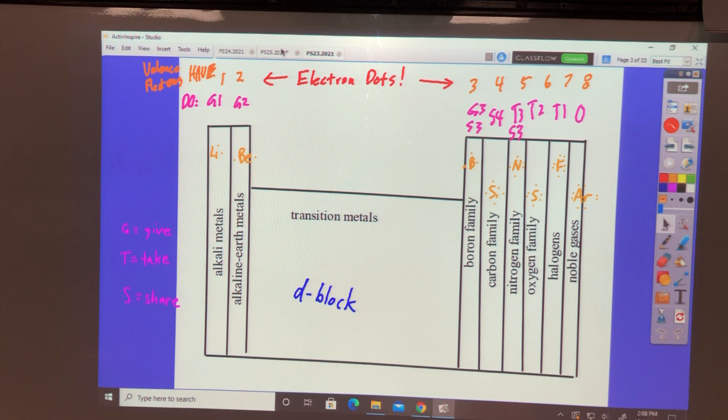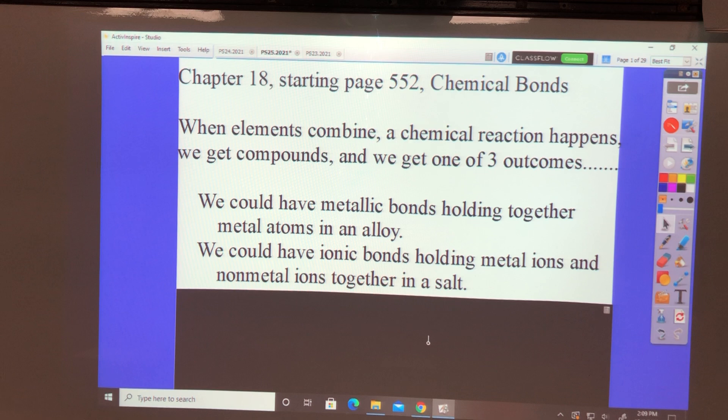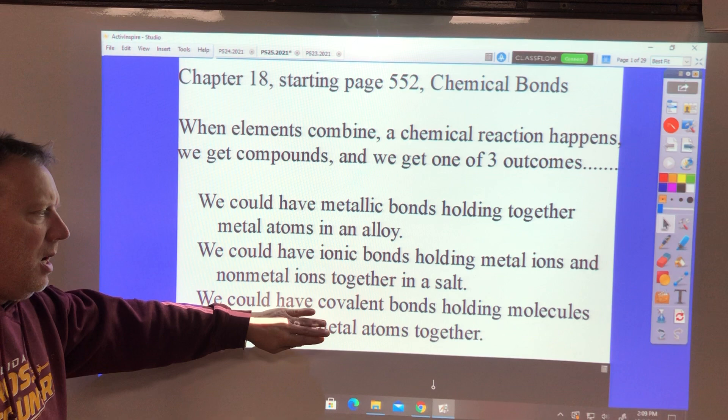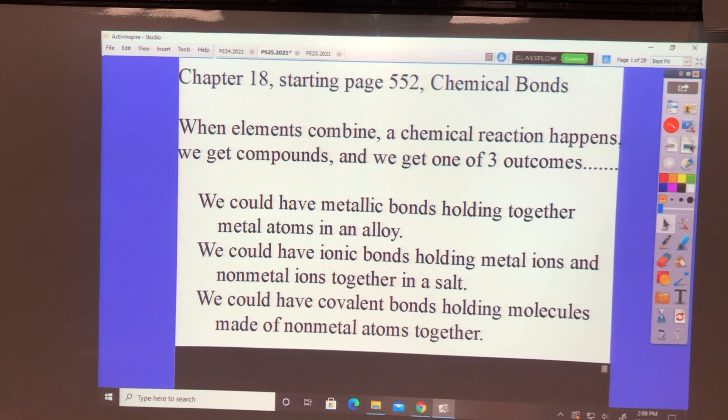We could have metallic bonds holding together metal atoms in an alloy. We could have ionic bonds holding metal ions and non-metal atoms together in a salt. Or we could have covalent bonds holding molecules made of non-metal atoms together.